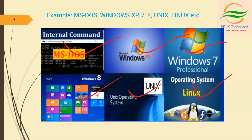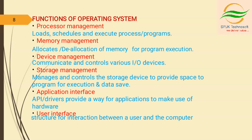Coming to the functions of the operating system. First is processor management — an operating system manages the working of the processor by allocating various jobs to it. Memory management — it assigns memory to various programs whenever required and also frees the memory when it is not in use. Device management — an operating system controls the working of all input and output devices. Storage management manages and controls storage devices to provide space for program execution and data saving. Application interface (API) stands for application programming interface and provides a way for applications to make use of hardware. User interface provides the structure for interaction between a user and the computer.